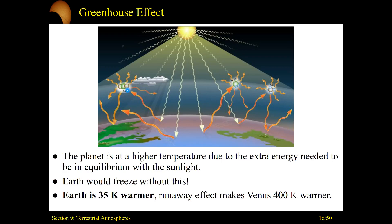If you increase the number of greenhouse gases — more CO2, more water, more CH4 in the atmosphere — you can have what's called a runaway effect. Look at Venus: Venus is 400 Kelvin warmer in its atmosphere because of the sheer amount of greenhouse molecules present.